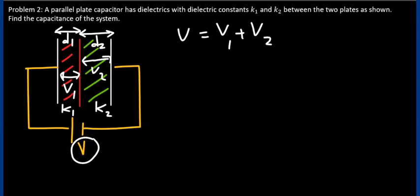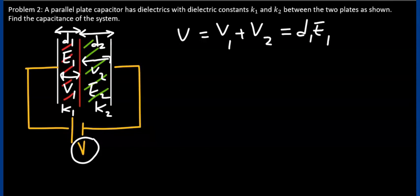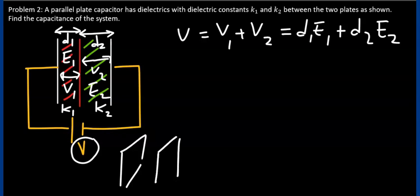Likewise, in terms of the electric fields within the two dielectrics, if dielectric 1 has electric field E1 and dielectric 2 has electric field E2 within them, then V1 is D1 times E1 and V2 is D2 times E2. We have seen before that if you have two surfaces in the form of plates,